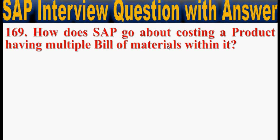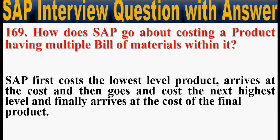Next, how does SAP go about costing a product having multiple bill of materials within it? SAP first costs the lowest level product, arrives at the cost, and then goes to cost the next highest level, and finally arrives at the cost of the final product.